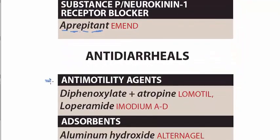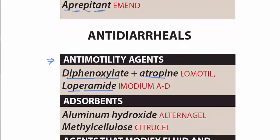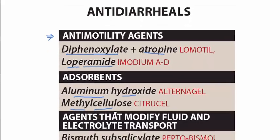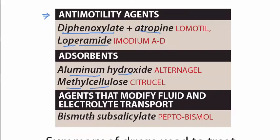Then the drugs used to treat diarrhea — these are the antimotility agents. In the antimotility agents we use a combination of diphenoxylate and atropine, available as Lomotil, and then we have loperamide. The adsorbents can also be used: aluminium hydroxide and methylcellulose. And agents that modify fluid and electrolyte transport include bismuth subsalicylate.